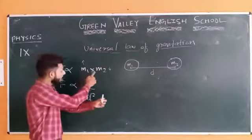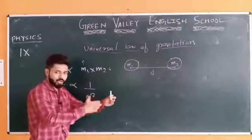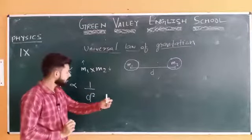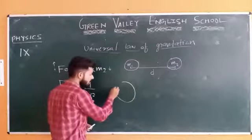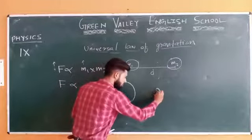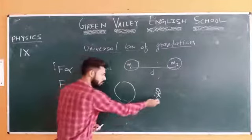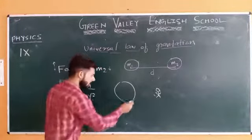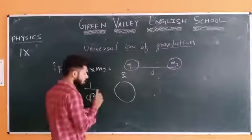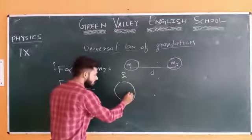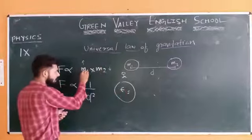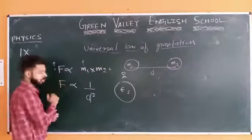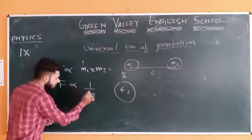The same thing is happening between me and this chalk. M1 is the chalk and I am M2. The product of our masses is so small that the force F we get is very less, so we feel no force. But when compared to the Earth — if the Earth is here and I am a smaller object — the mass of the Earth is very large, so the product of Earth's mass with my mass also becomes very large. That is why we feel this gravitational force.